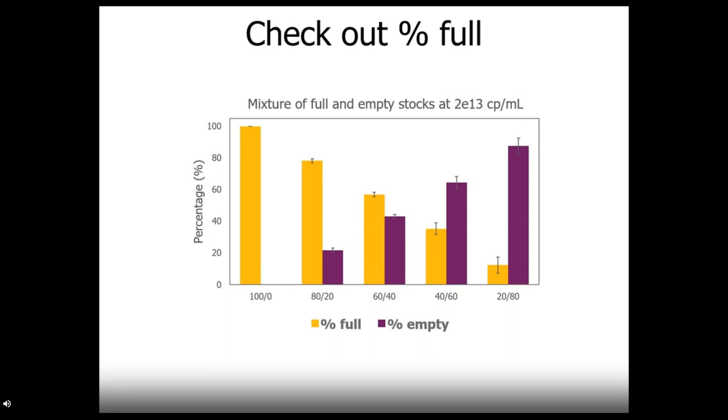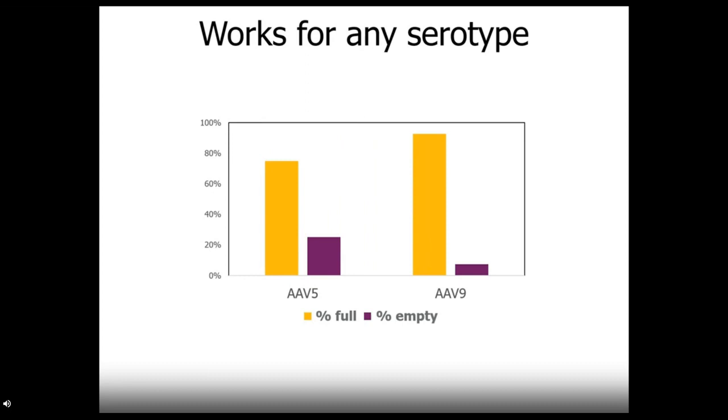To look more into our ability to see percent full values, we took stocks of empty and full AAV9 and mixed them at different ratios. For each combination, 100% full stock, 80% full stock, and so on, Stunner gets a good read on the data and percent full and percent empty align well with our expected values. And this application works for any serotype. Just tell Stunner the basics about what serotype you have and what its DNA payload is, and Stunner takes care of the rest of the heavy calculating.